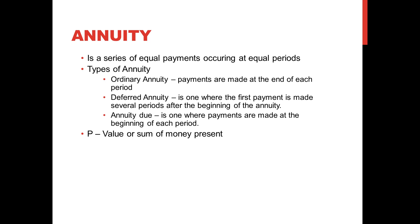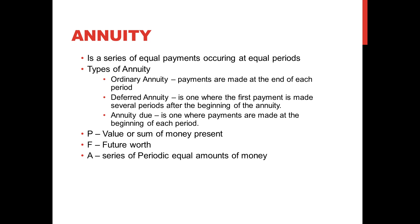Let us have the notations in our equation. First, P is the value or sum of money at present. F is usually the future worth. A is the series of periodic equal amounts of money. N is the number of interest periods, similar to what we have done in compound interest as well as simple interest. And I is the interest rate per interest period.